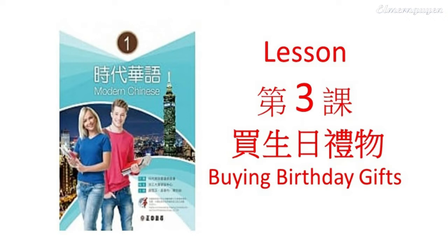对话2。这种小铅笔怎么样？很可爱。有美喜欢可爱的东西，我们买两支，好不好？两支五十块钱。五十块钱很便宜。你看，那个颜色漂亮，红色、白色都好看。我想有美喜欢白色，他常常穿白色的衣服。好，我们买白的。